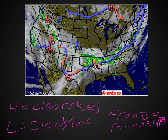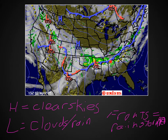What you want to know: the H's are nice for clear skies, L's for cloudy or rainy skies, and the fronts are showing you where rainstorms are and where severe weather is happening.